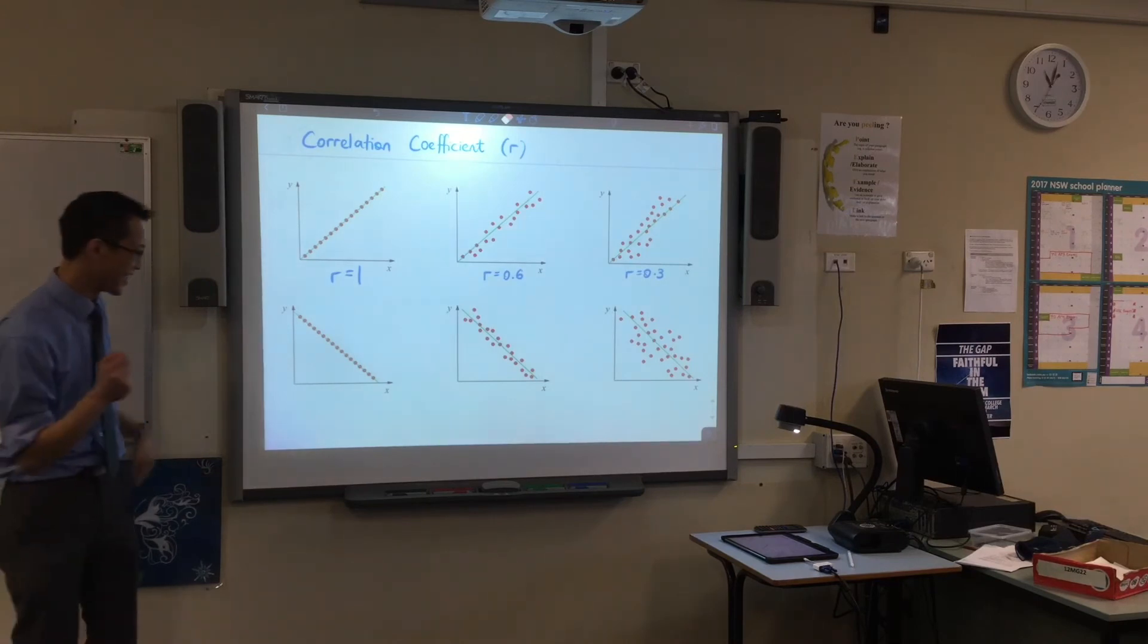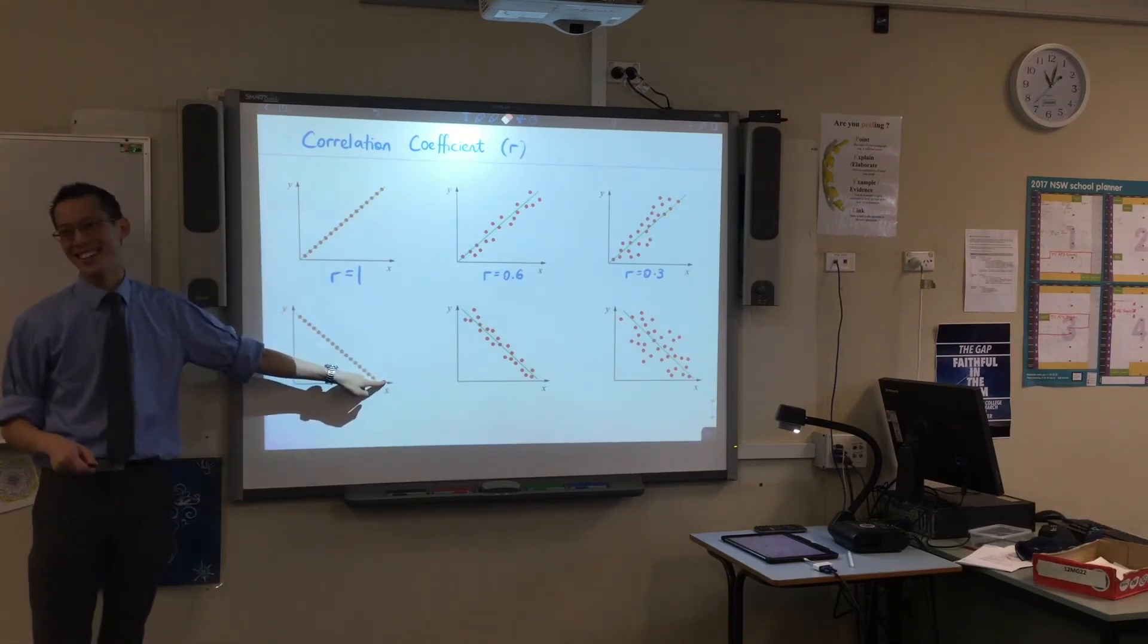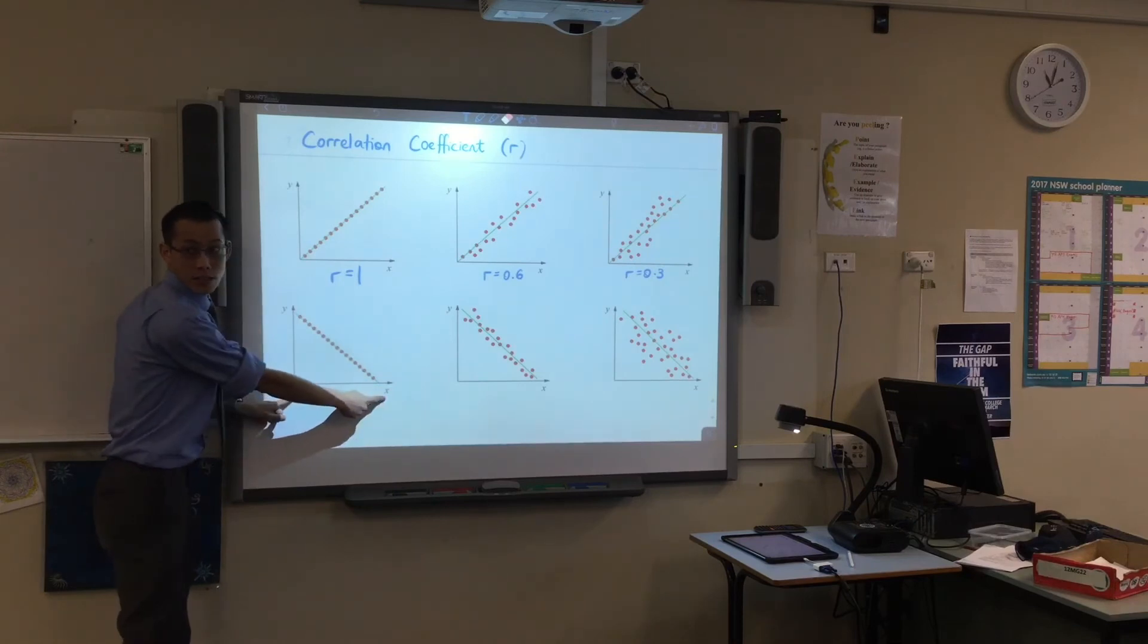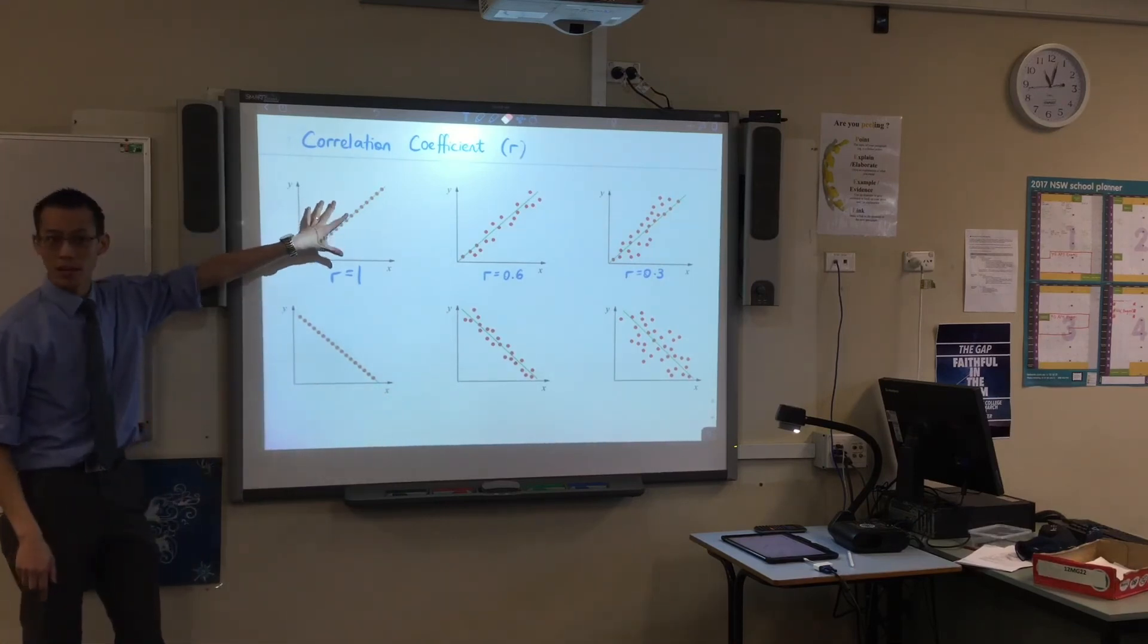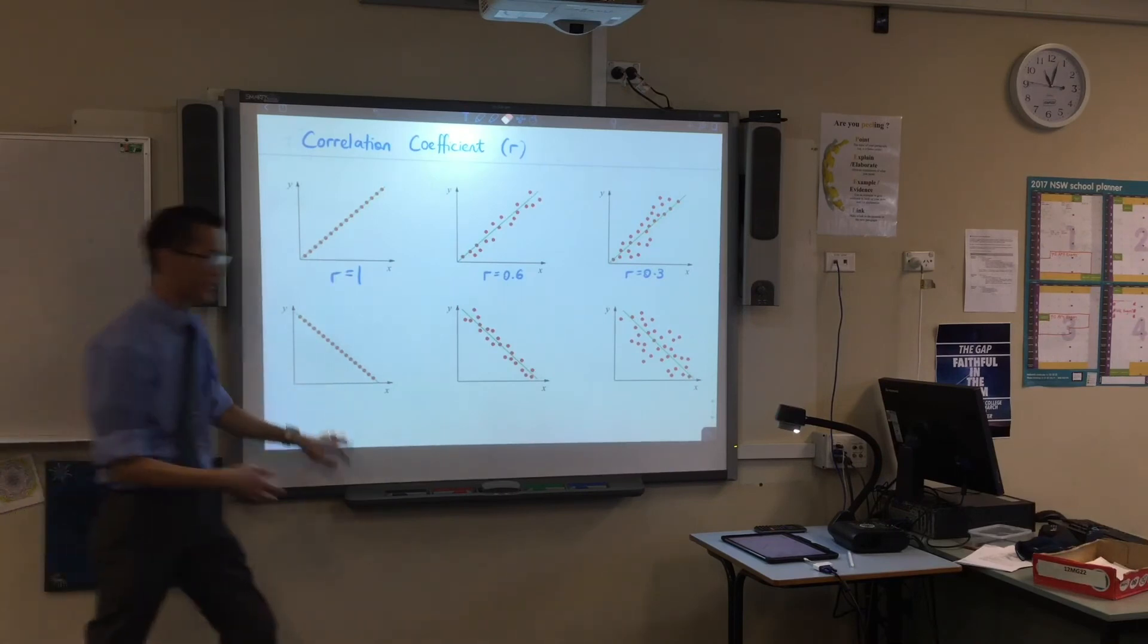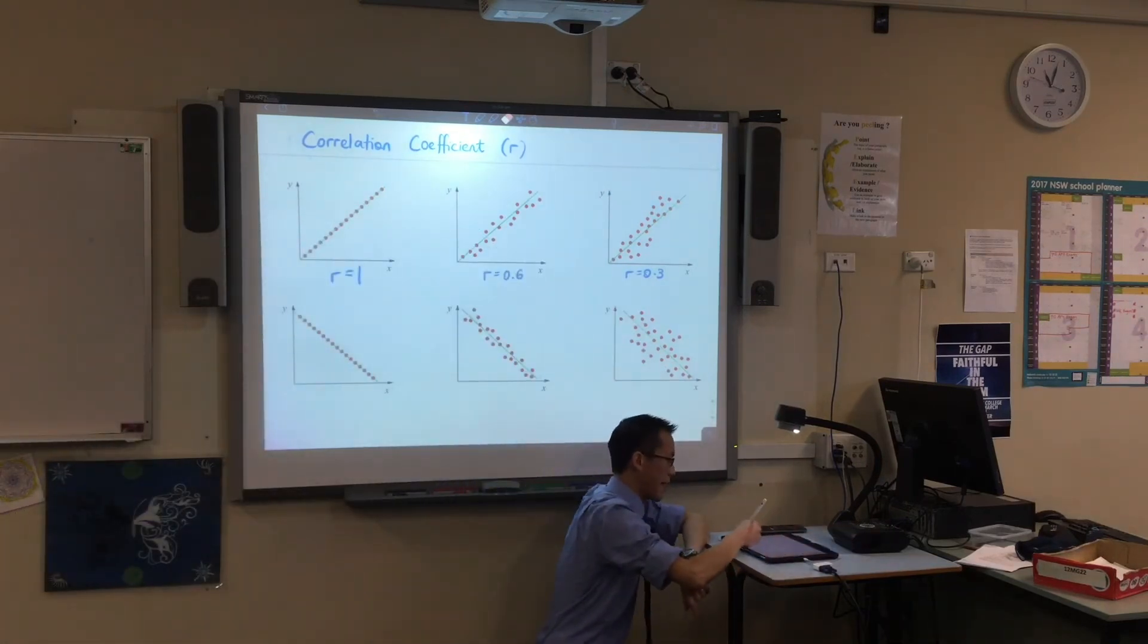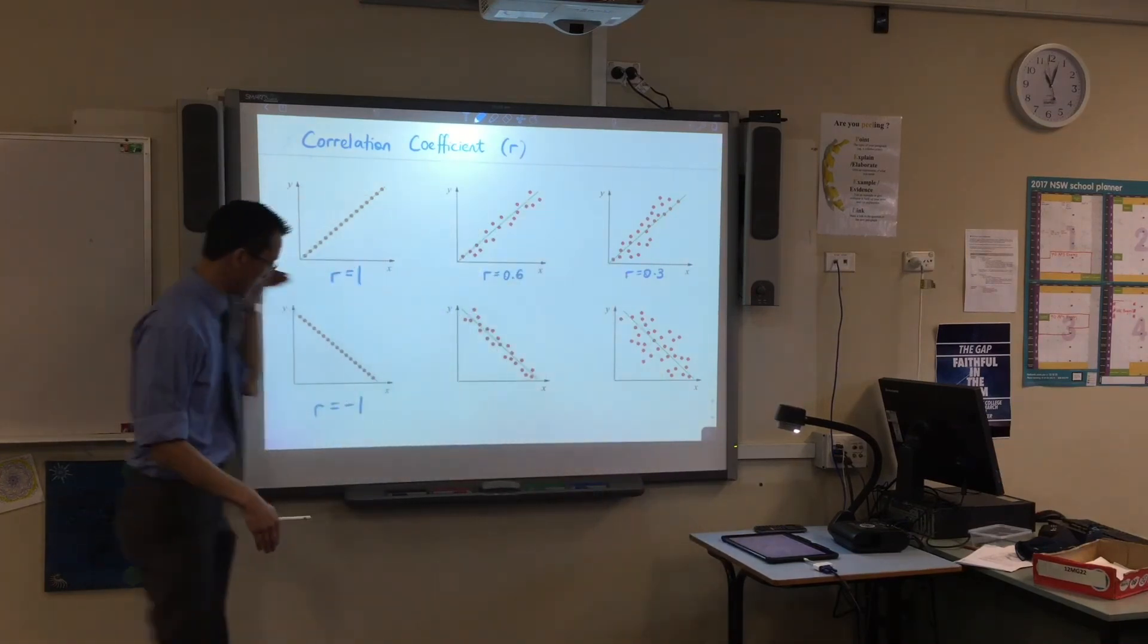Minus 1. Okay. This perfectly lines up, but as x increases, y decreases. So this is not a positive correlation like up here. This is a negative correlation. However, it's still bang on. So, wrong colour. So, it still has this value of 1, but it's negative, indicating it's going down.